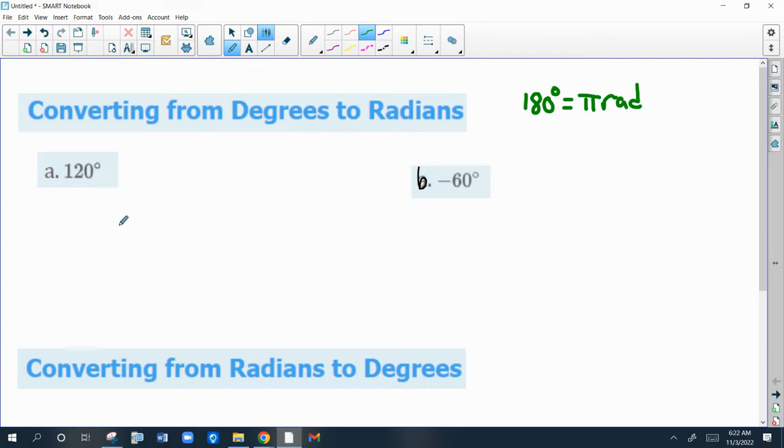If you're starting with 120 degrees, you need to use that conversion factor. You're either going to write 180 degrees over pi radians or vice versa. And the way to remember is if you're converting to radians, your radians must be in the numerator and the degrees must be in the denominator so that they cancel out. That's the easiest way to remember which way to present this ratio.